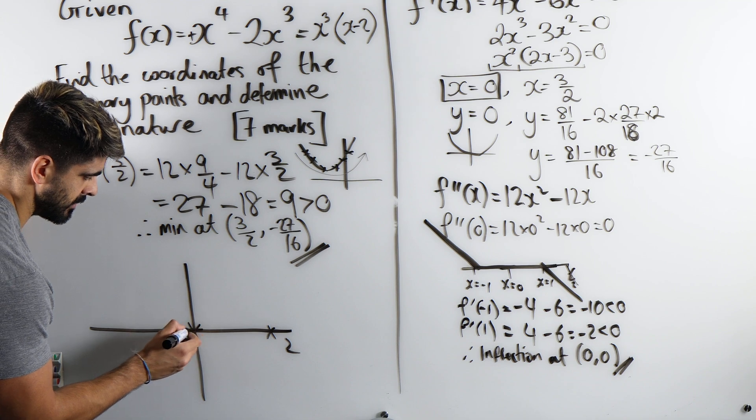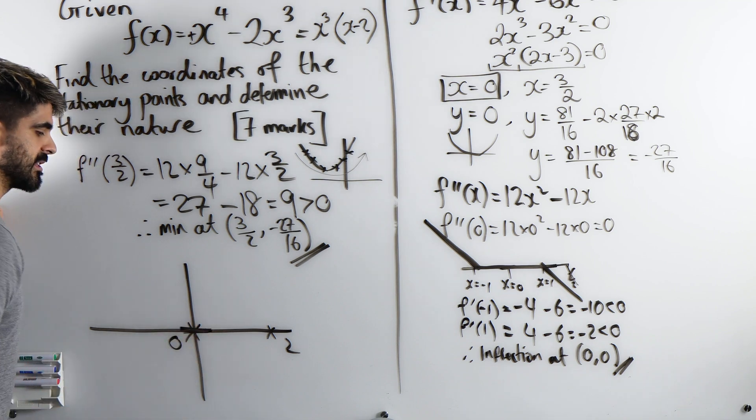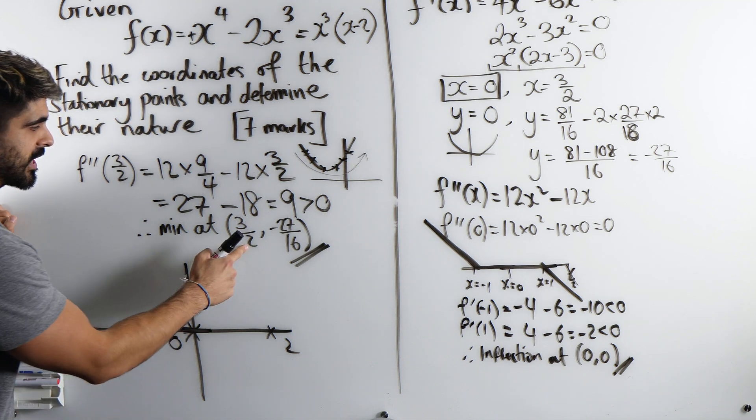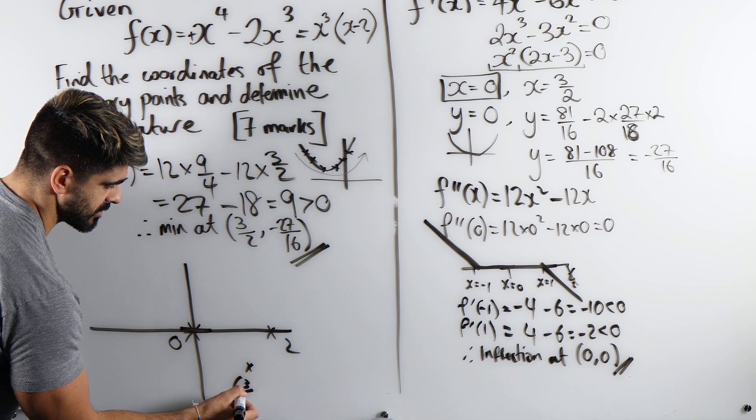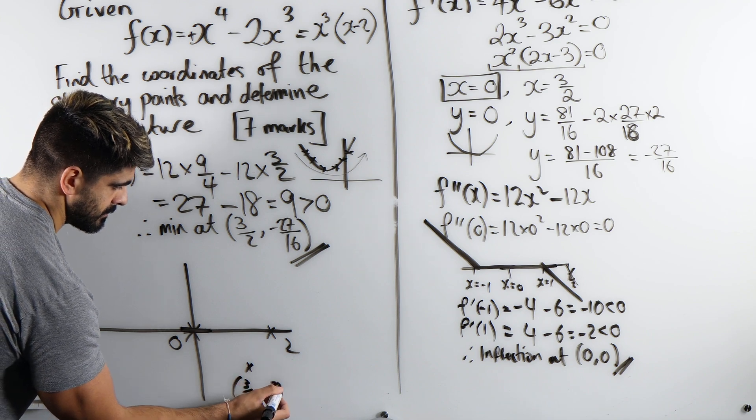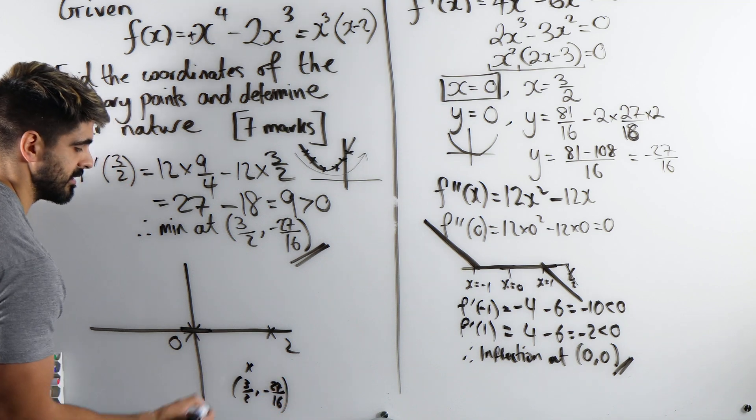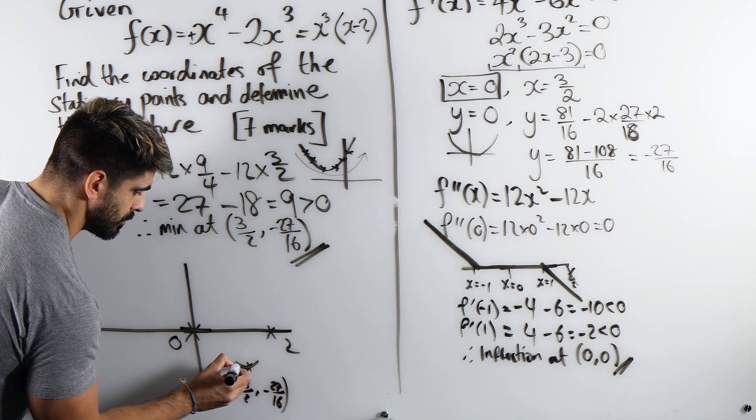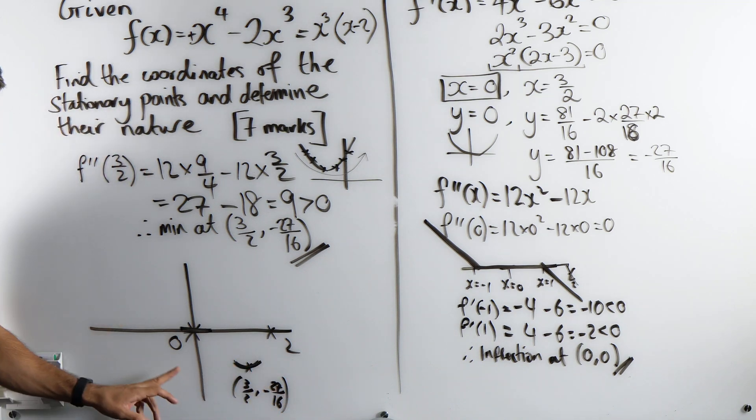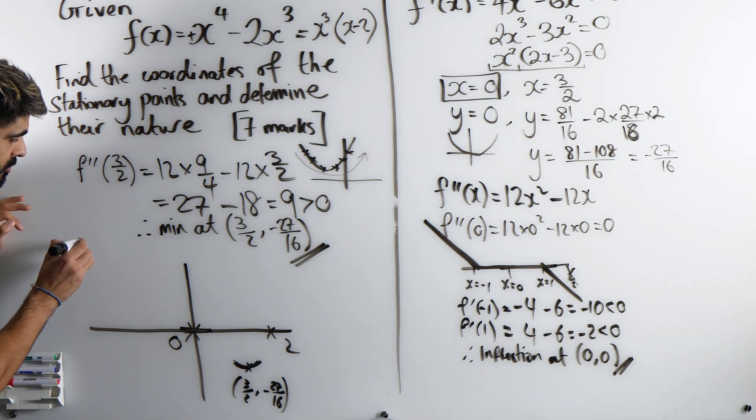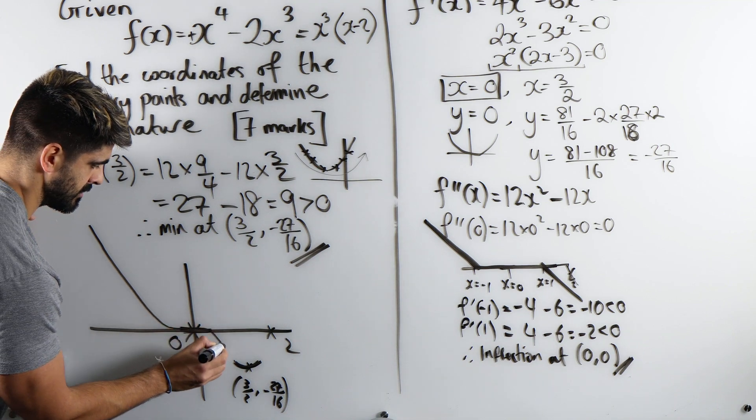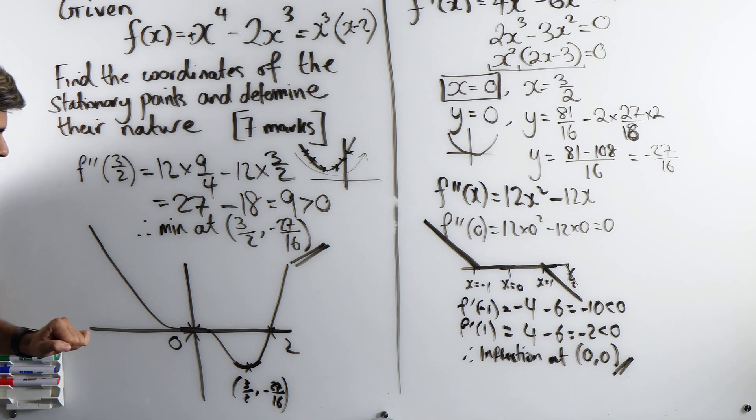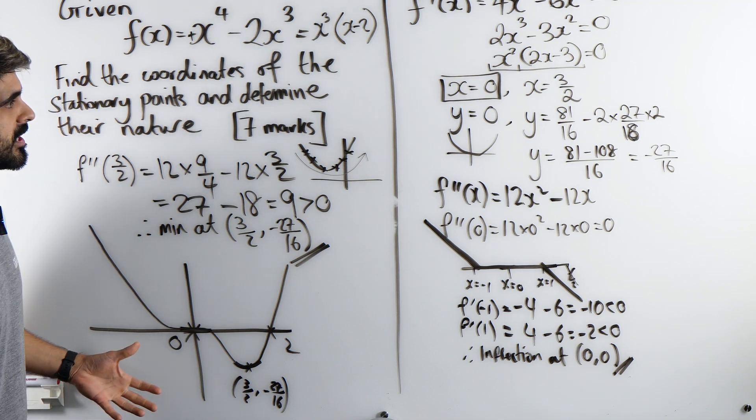So here it's flat. It's an inflection point. Then we also had 3 over 2 minus 27 over 16, here. And that is a minimum point. So I always do that bit first. And then we just complete the graph. So it's going to come down, down, go flat, down, back up. And that is what this quartic looks like.